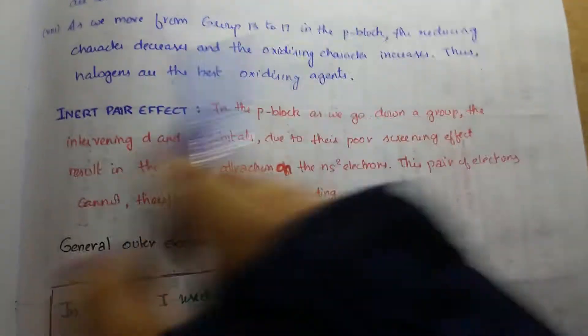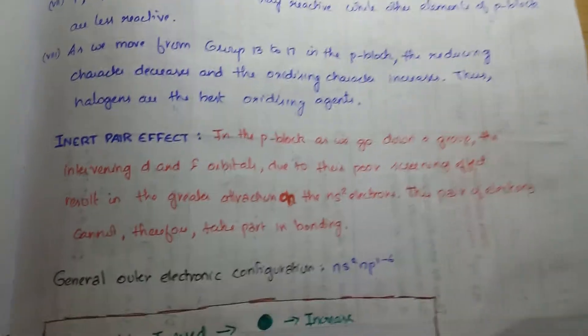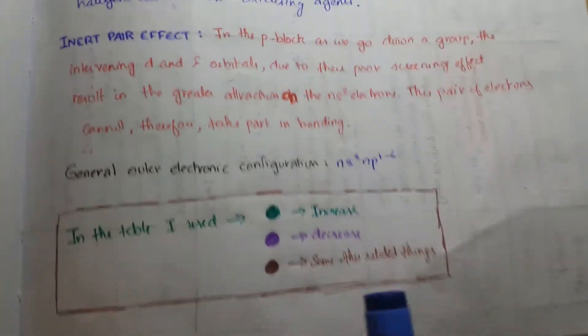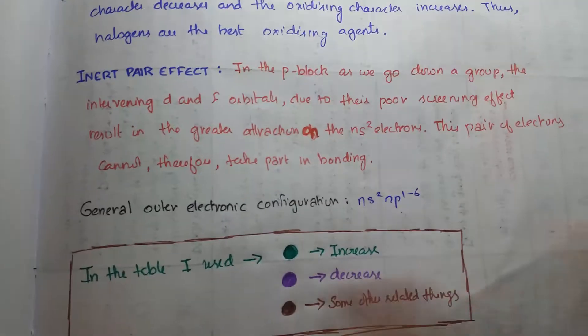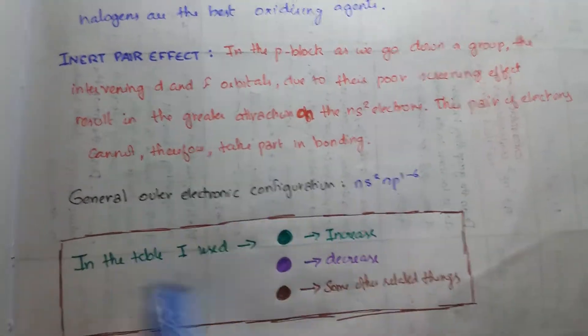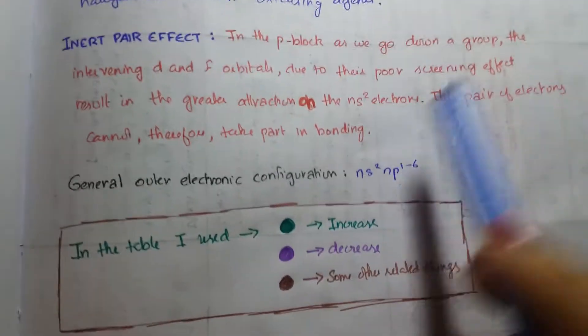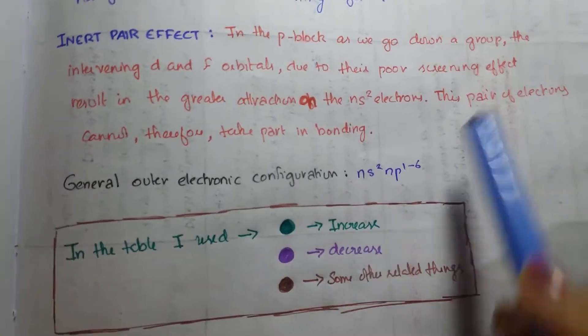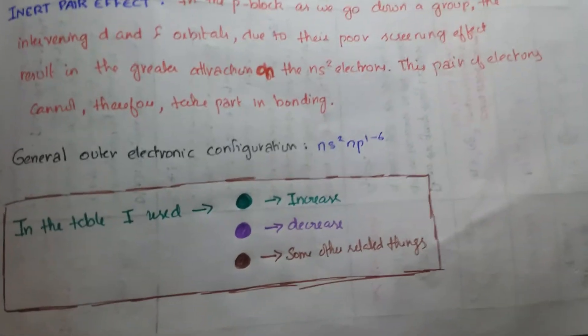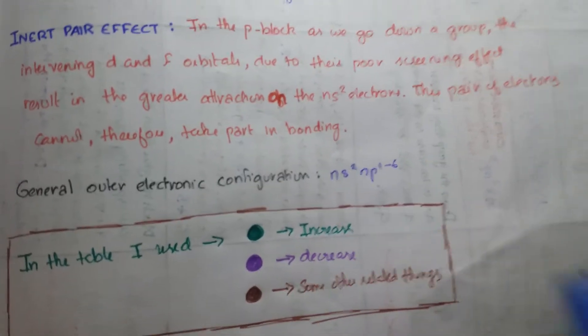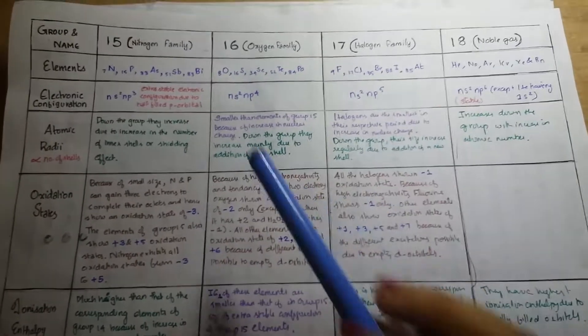And now I will teach you about the general characteristics of each group in P-block. In the following table I have made, I have given each thing in each color - that is green color for indicating the increase, violet for indicating the decrease, and brown for some other related things. So here I have a table.